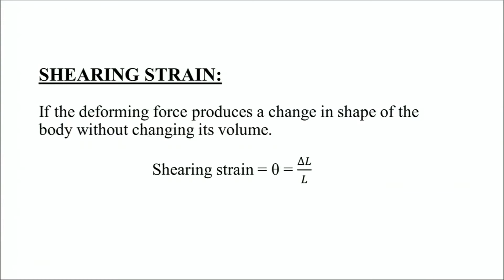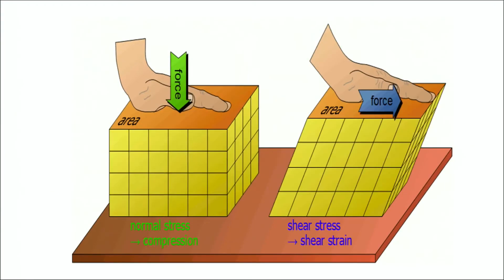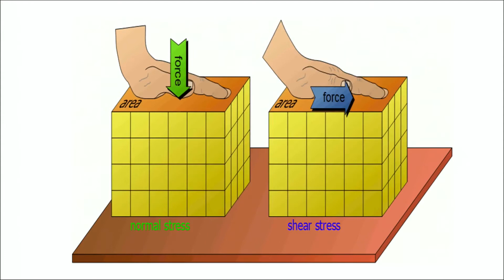The last type of strain is shearing strain. We need to remember that shearing means the force which acts tangentially over the surface of a body. If the deforming force produces a change in the body without changing its volume, it gives a shearing strain. As you can see in the next slide, we have a live example comparing normal stress in compression and shear stress in shearing strain. The force is applied tangentially over the surface of a cube, and when this happens, the length slightly slants to the other end, producing a shear strain.